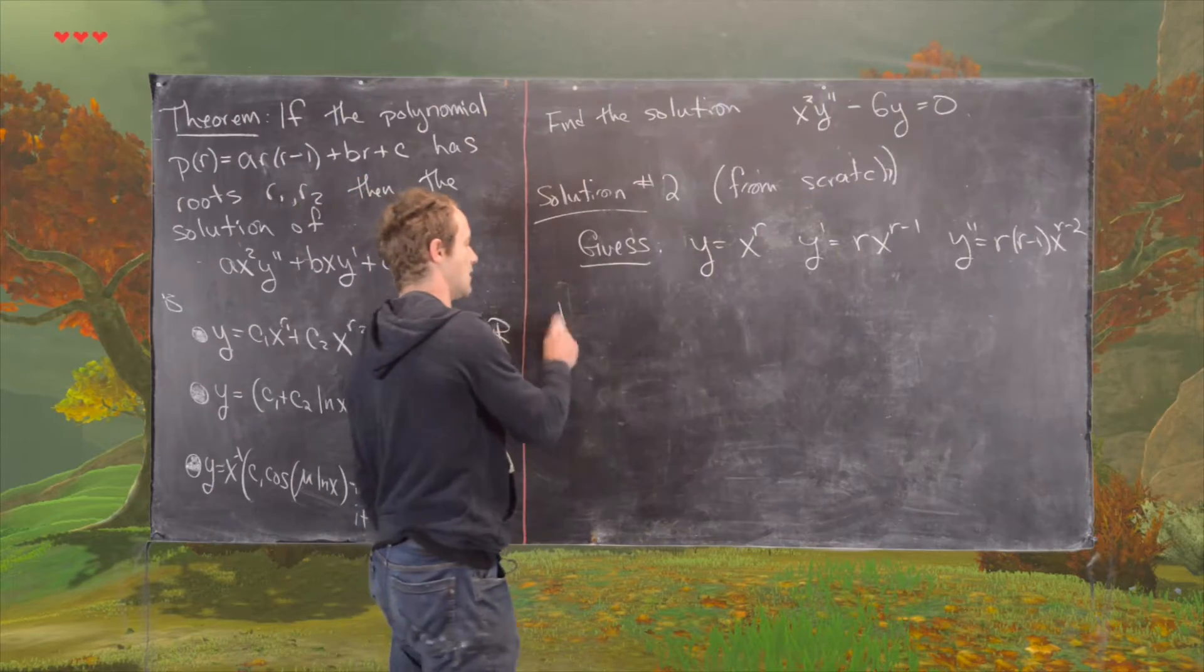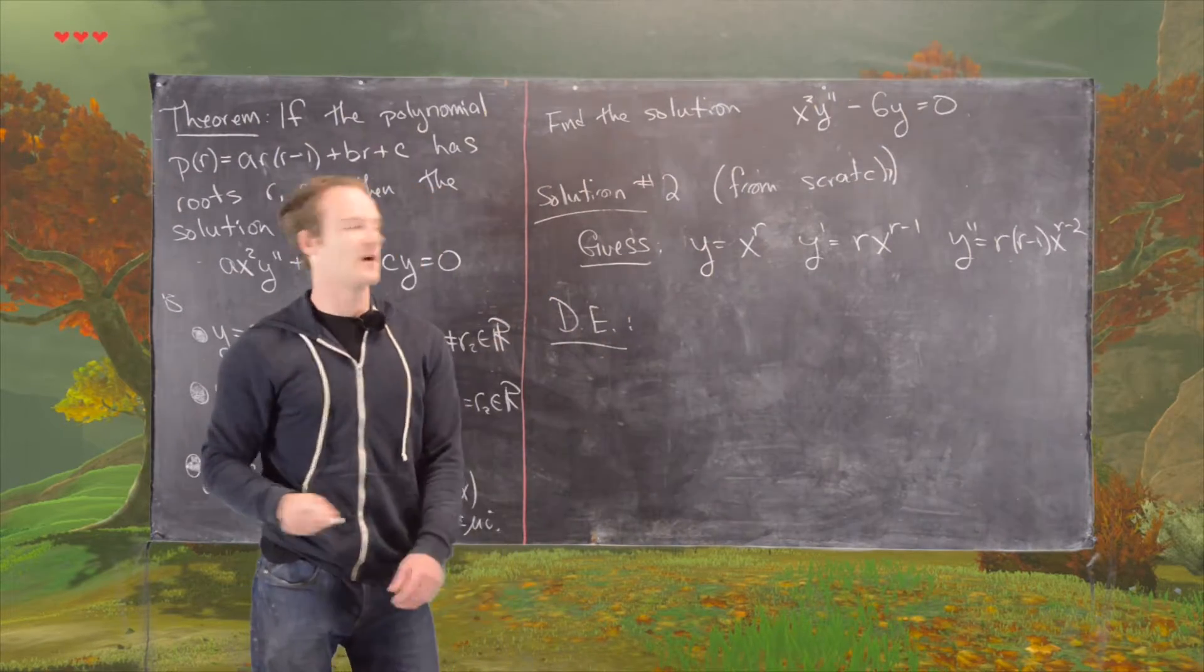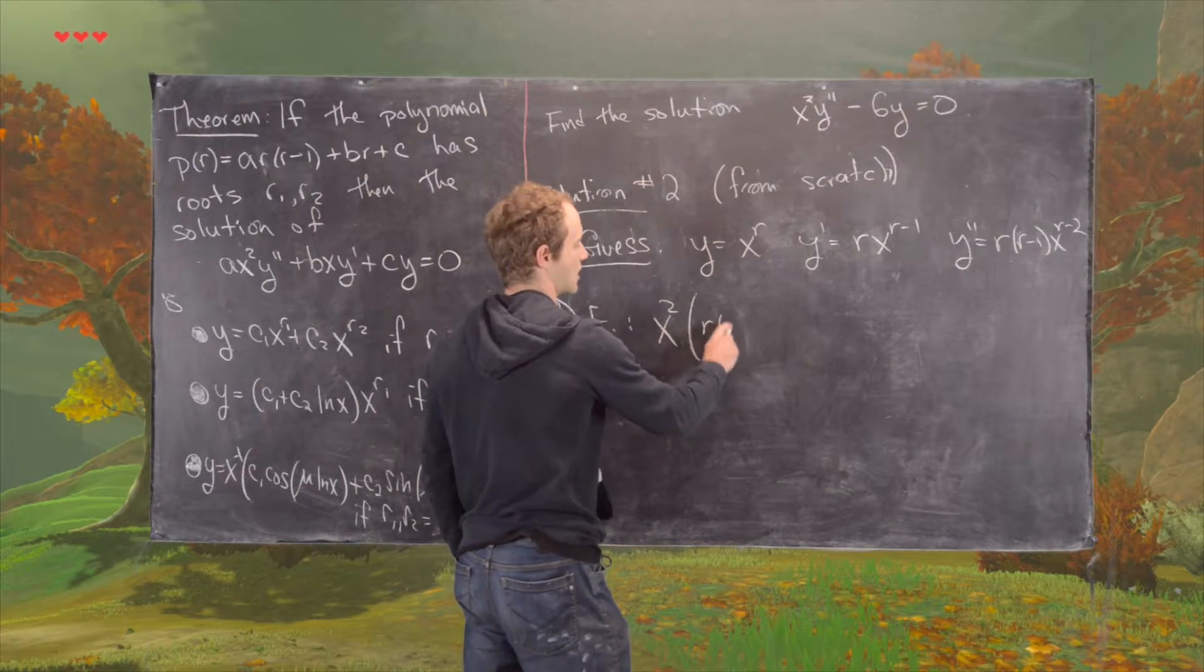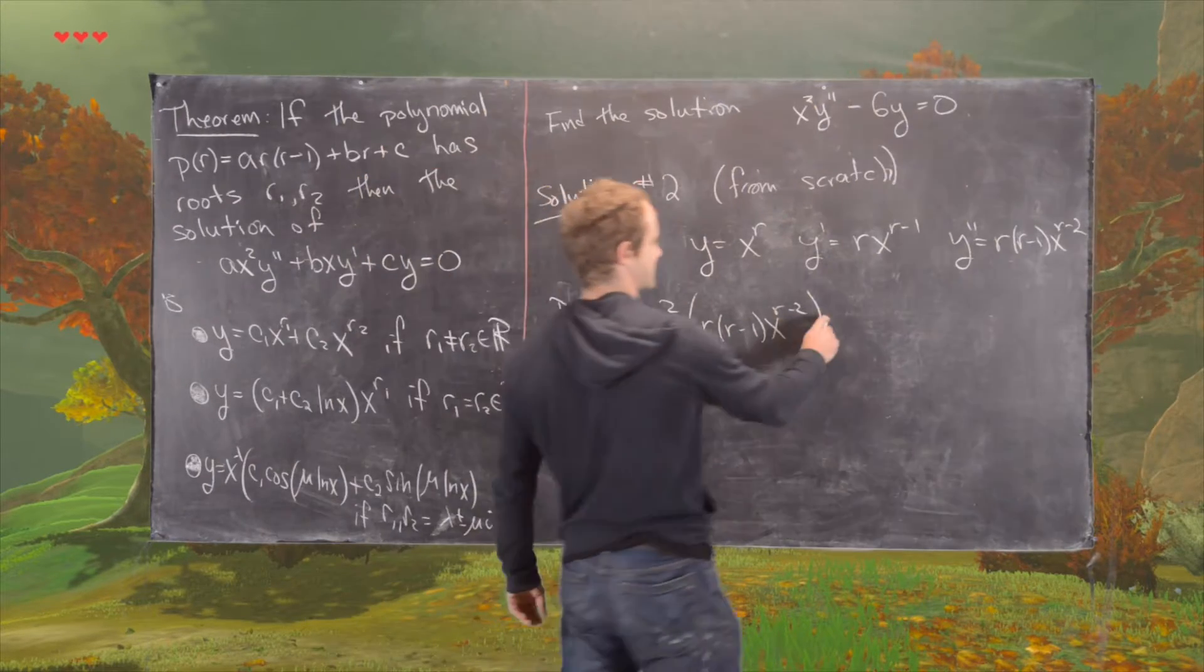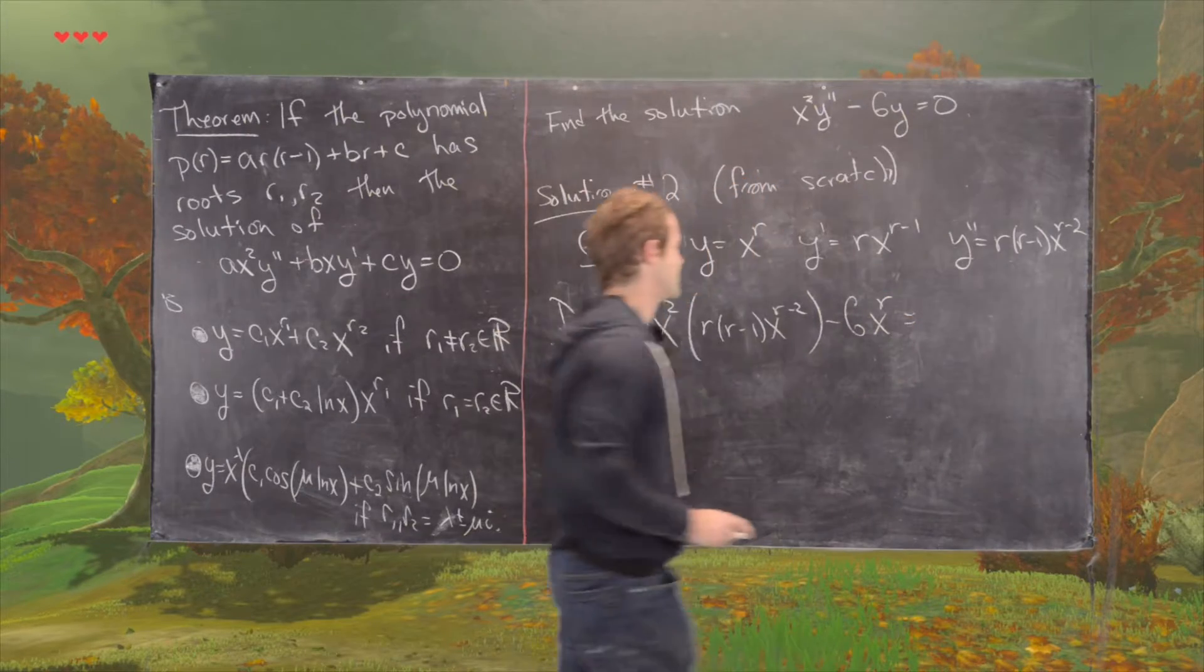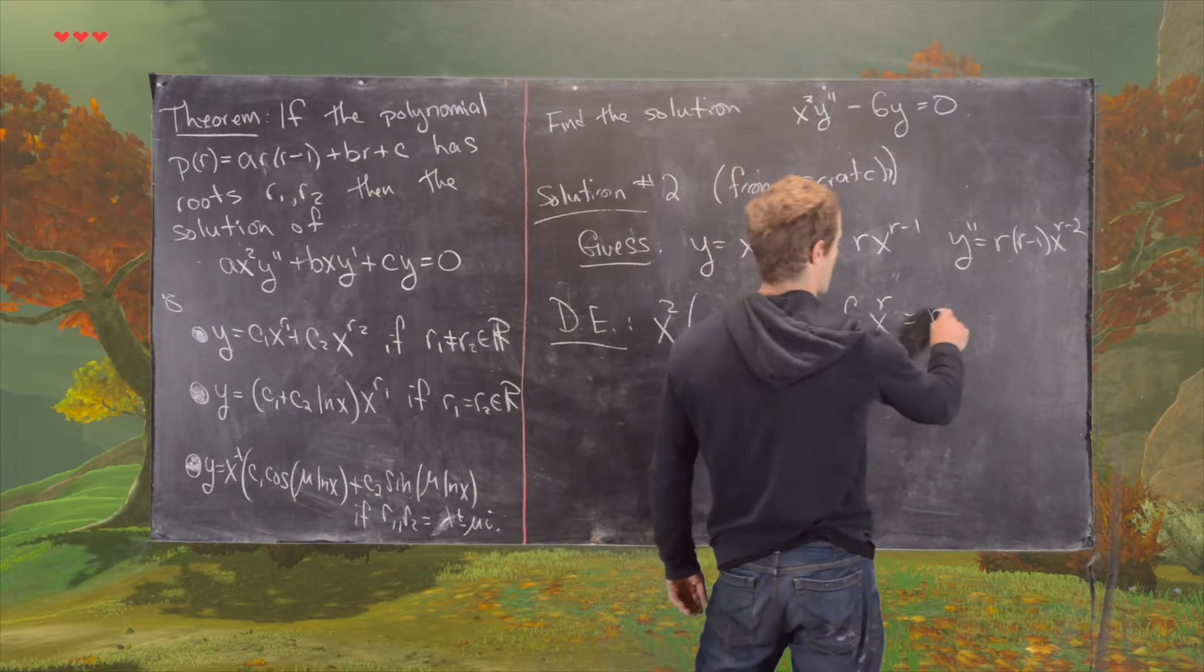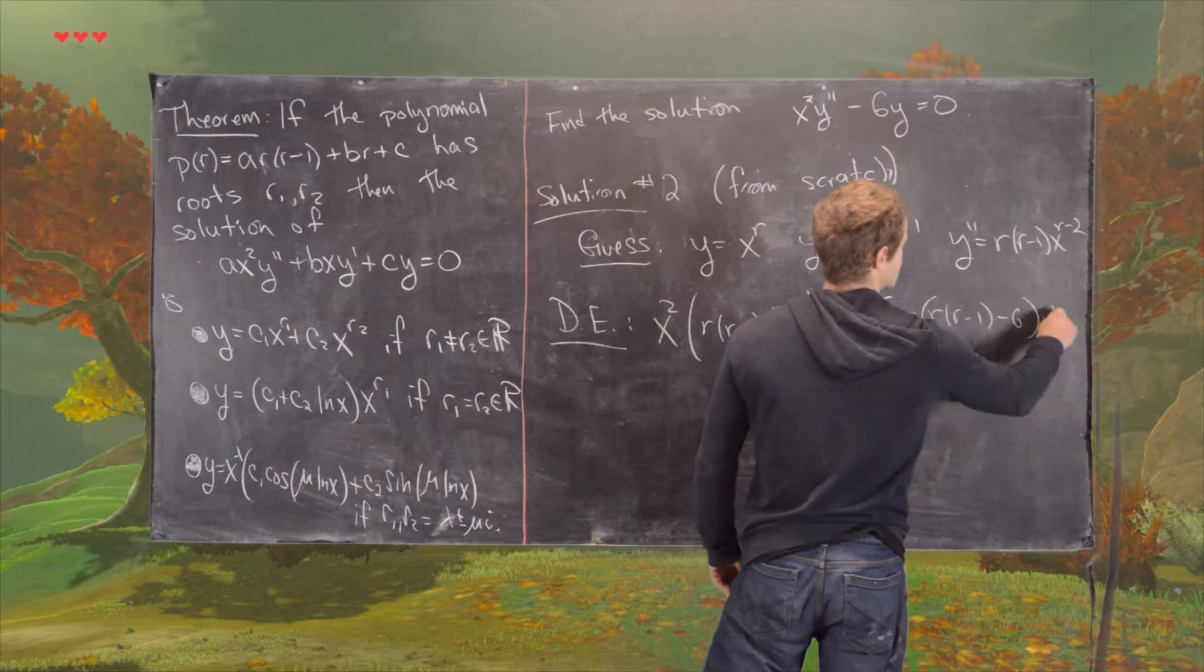And now putting that into the differential equation gives us the following. So we have x squared times r, r minus 1, x to the r minus 2, minus 6 times x to the r. So notice that's going to simplify down to r times r minus 1, minus 6 times x to the r.